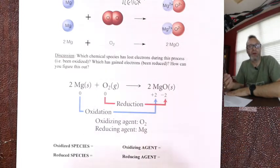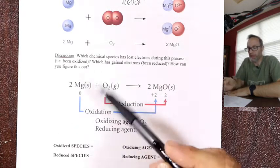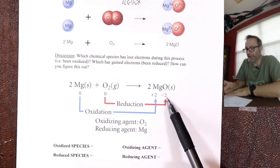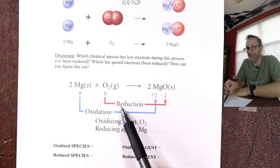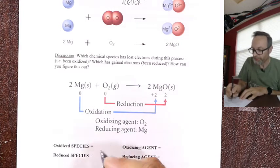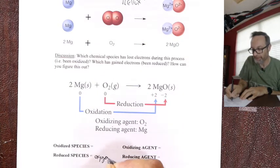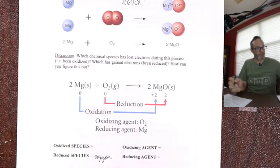Think about it like that — oxidation is loss, reduction is gain. I always like to think about who gained an electron, who became more minus. Oxygen went from a zero charge to a minus 2 oxide, so it gained electrons. Reduction is gain — oxygen is the thing that was reduced.